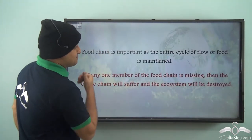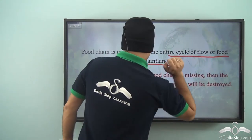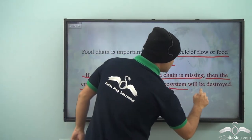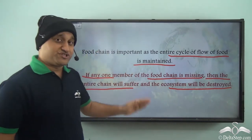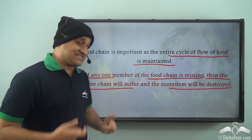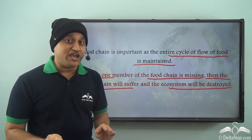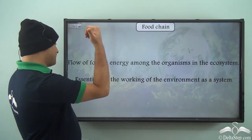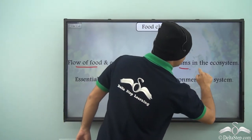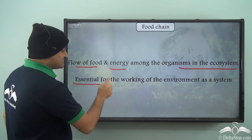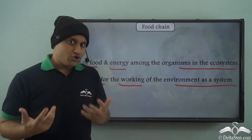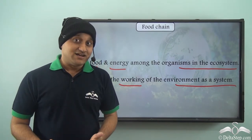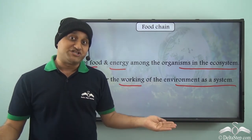The food chain is important because the entire cycle of flow of food is maintained through it. If any one member of the food chain is missing, the entire chain will suffer and the ecosystem will be destroyed. Food chain — the flow of food and energy among organisms in the ecosystem — is essential for the working of the environment as a system. Without a proper food chain, the environment will not survive, and as a result even humans will not be able to survive.